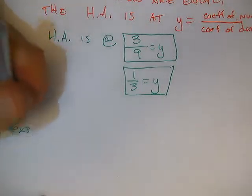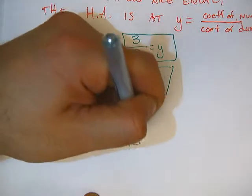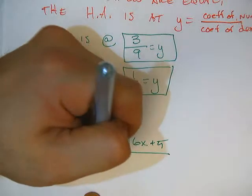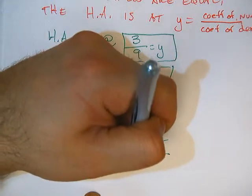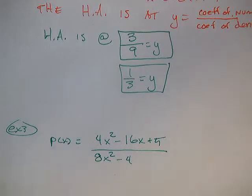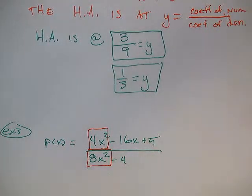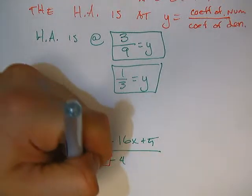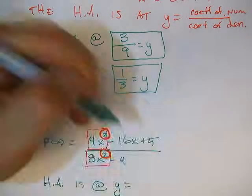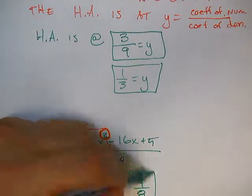So let me just do another quick example so you can see how that works. So let's say I have example 3 here. And this one is going to be p of x is equal to 4x squared minus 16x plus 5. And the denominator is just going to be, let's call it 8x squared minus 4. Just like that. Nothing too complicated. Well, we look at the leading coefficient in the numerator, leading coefficient in the denominator. I notice that the degrees are the same. So I can cut right to the chase now. And I can say that my horizontal asymptote, ha, is at y equals 4 over 8. Just the coefficients that we have here and here. And that would be where my horizontal asymptote is.